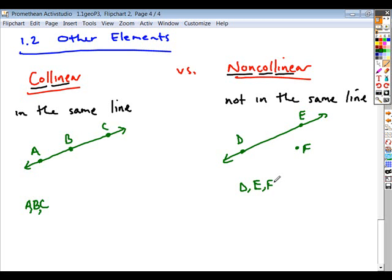So if I put another point here, called it G, would the set of points A and G be considered collinear or non-collinear?